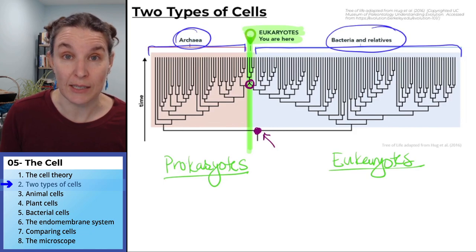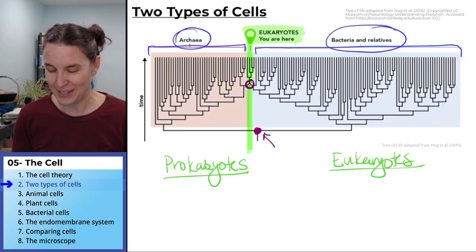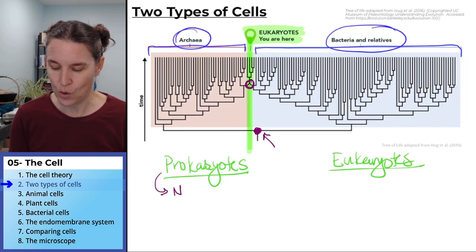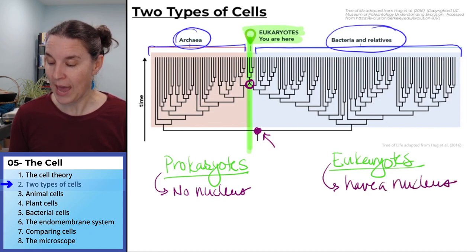Fundamentally, the defining factor of prokaryotes and eukaryotes is that prokaryotes have no nucleus. And eukaryotes have a nucleus. And the nucleus contains DNA.